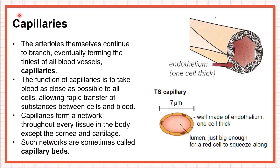Arterioles divide into capillaries, where gaseous exchange takes place. Capillaries are only one cell thick — the endothelium is one cell thick and can only allow one red blood cell to pass through at a time. Capillaries form a network throughout every tissue in the body, except the cornea and cartilage; such a network is sometimes called capillary beds. The diameter of a capillary is around seven to eight micrometres, and a red blood cell at about seven micrometres can just fit through, allowing oxygen and carbon dioxide to diffuse.